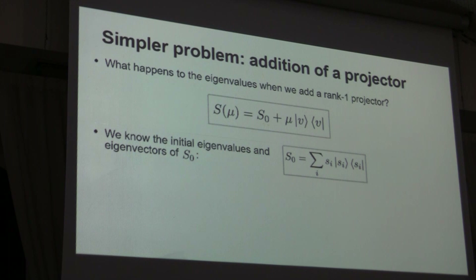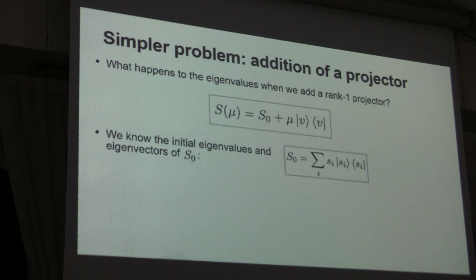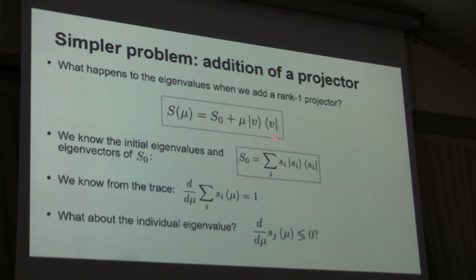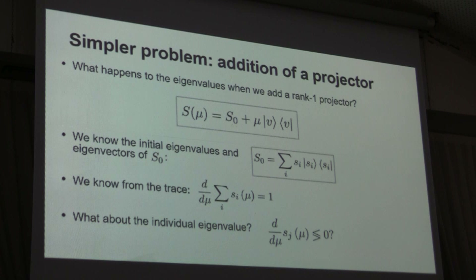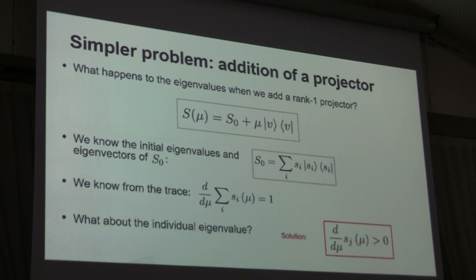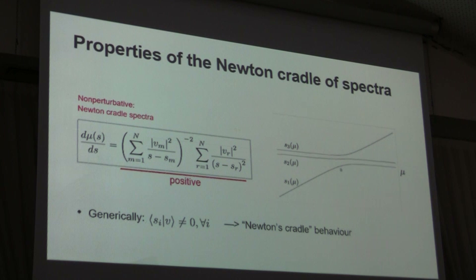The setup is that you know the eigenvalues and eigenvectors of the free Hamiltonian H0, and you're wondering what happens to the new eigenvalues — how do they move as we change the coupling constant? We know trivially from the trace that the derivative of the trace with respect to the coupling constant is one, it's greater than zero. But what about the derivative of each individual eigenvalue? Is it greater than zero or less than zero? Does it depend on the others? I'll show you that all of them move in the same direction. Here's a non-trivial formula that proves this.